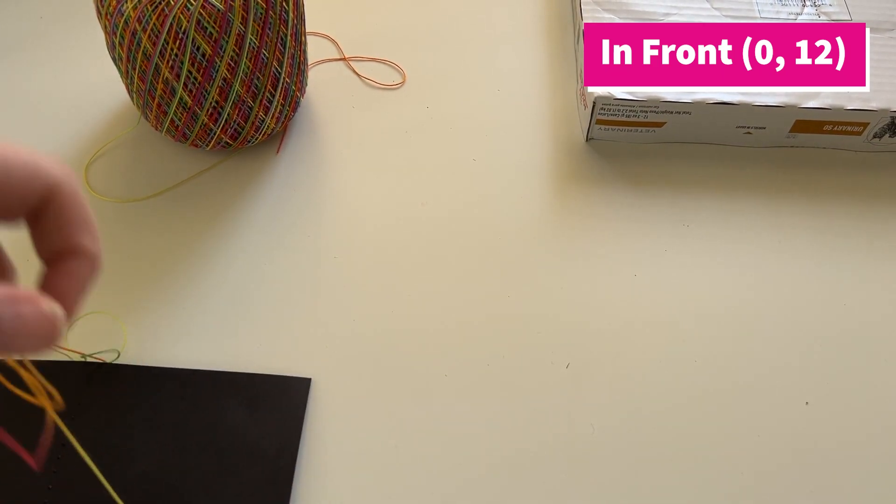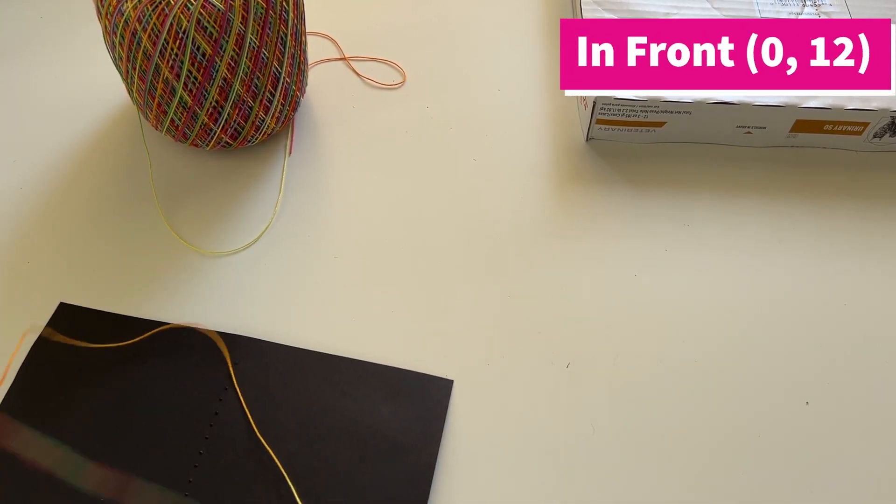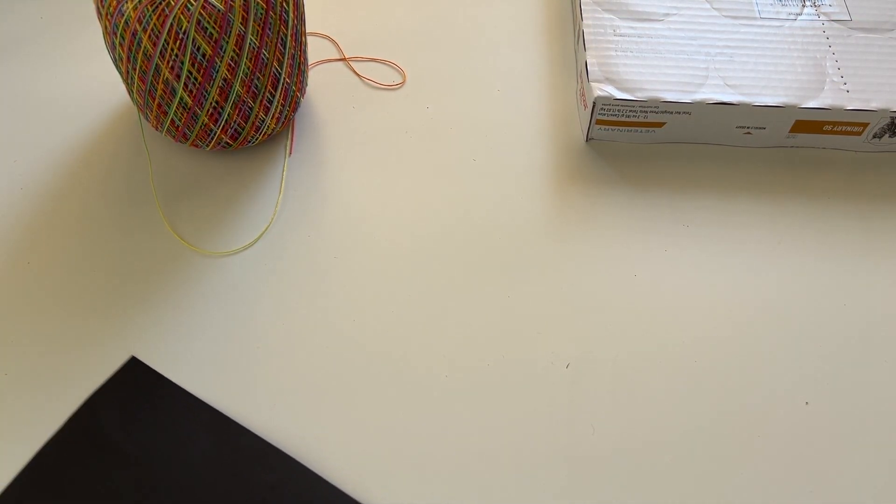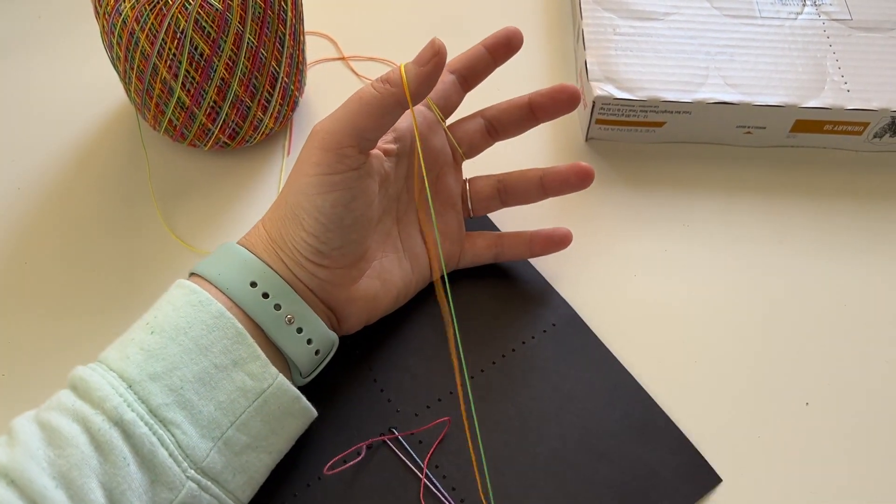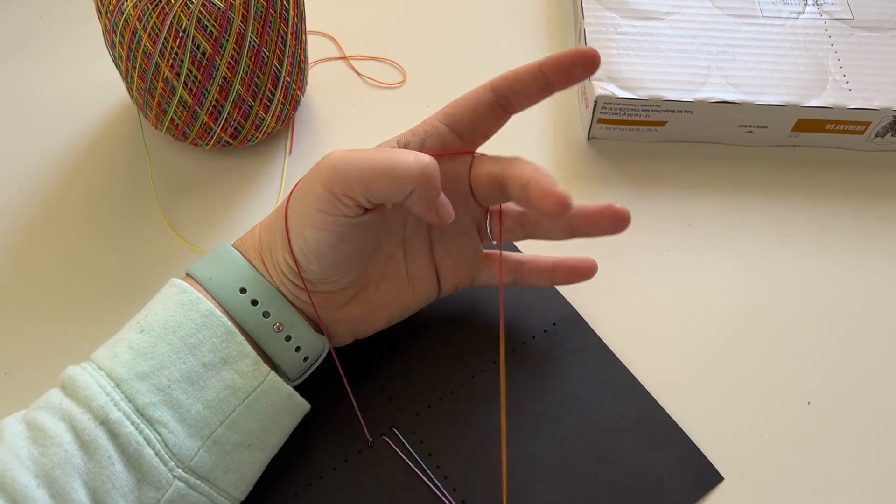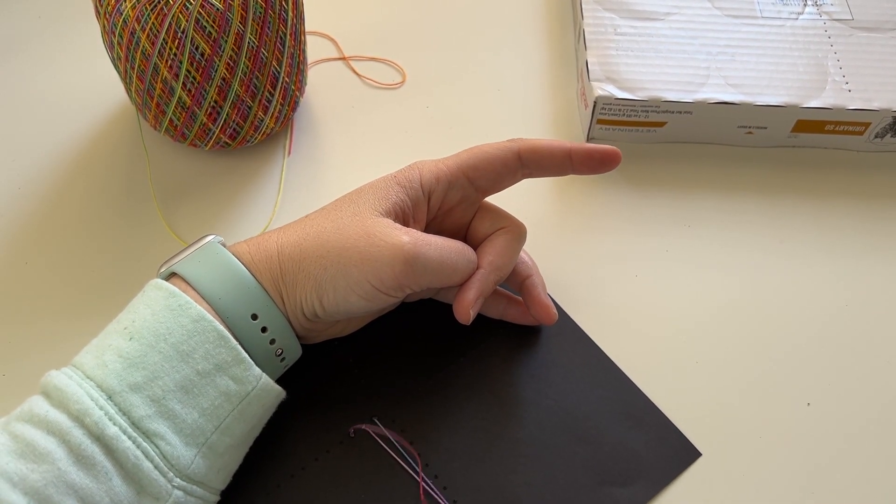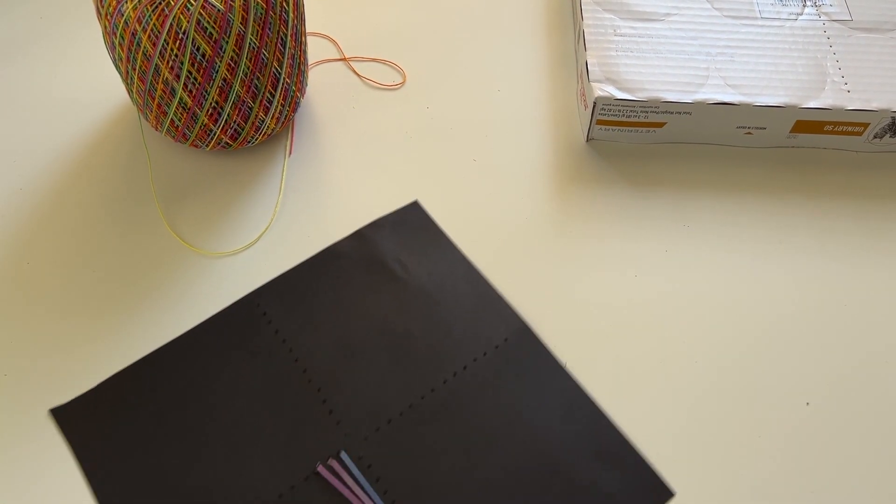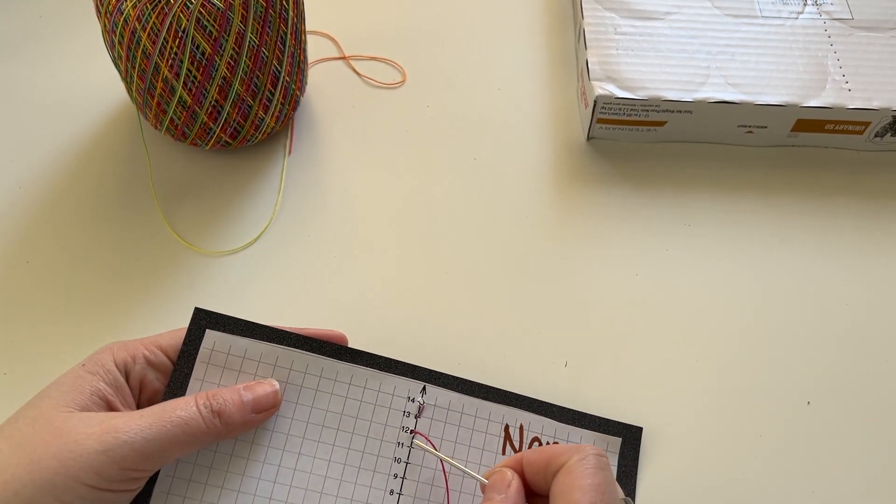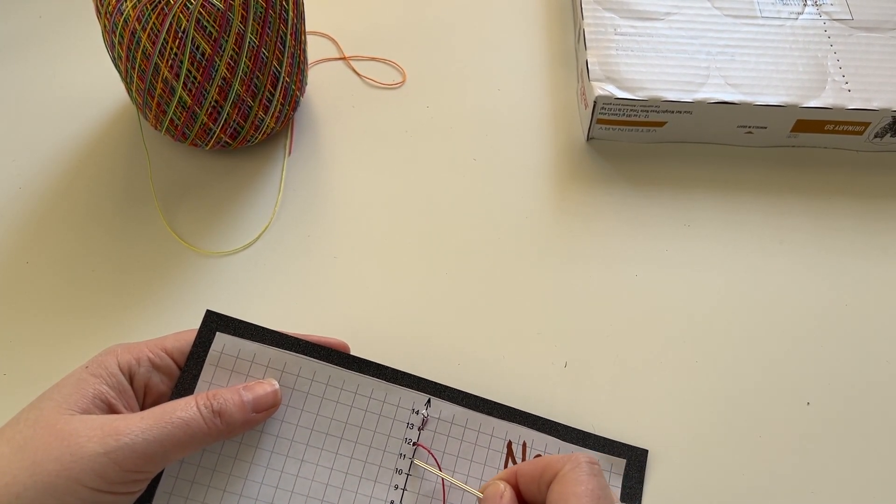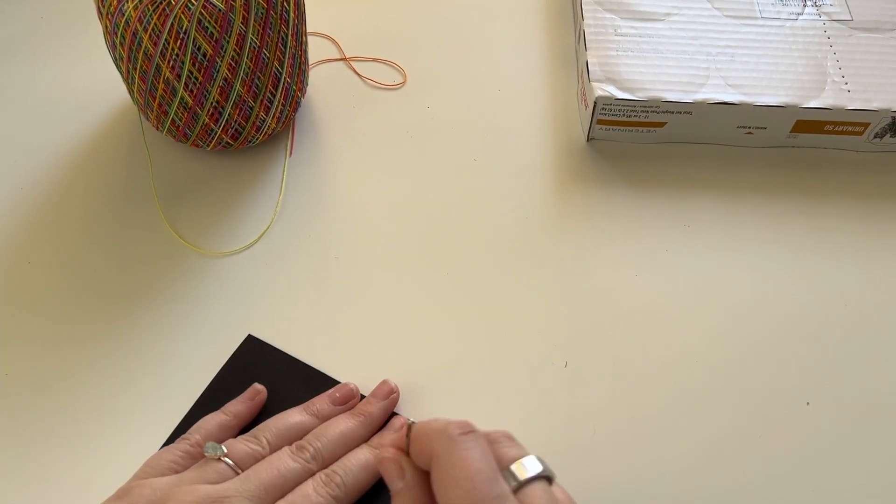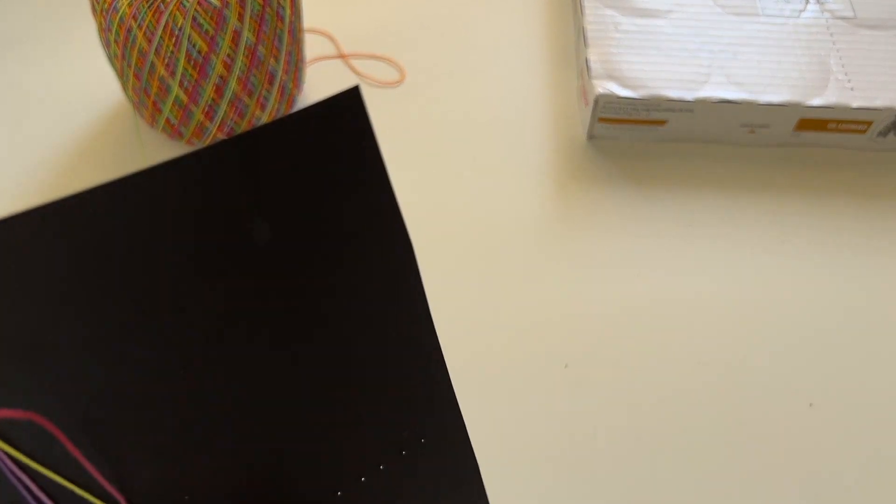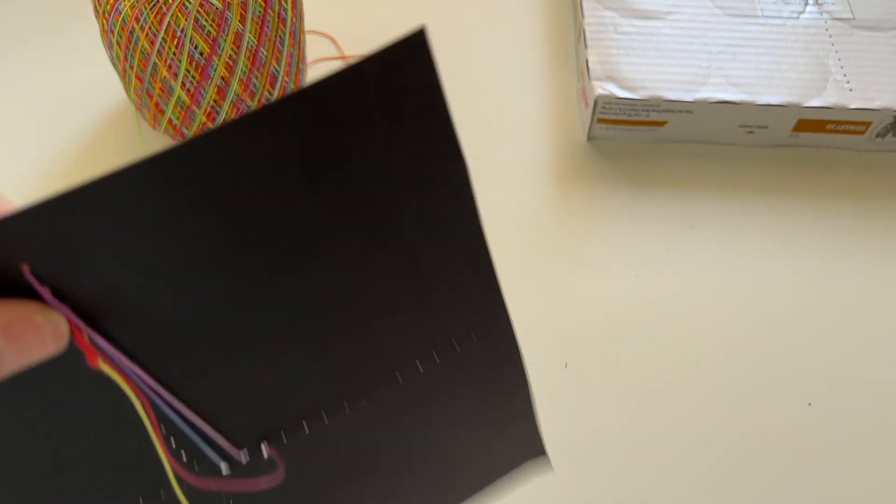This time I'm going to hold up my yarn so that it doesn't cause the same knot problem. Flip it over. Now again I'm not going to go down, I'm going to go into the next one below. Then you are just going to repeat this process through all of the coordinates on the list that I gave you.